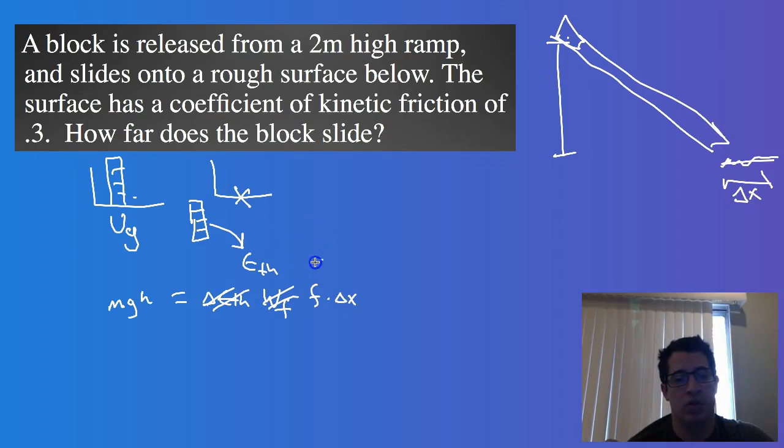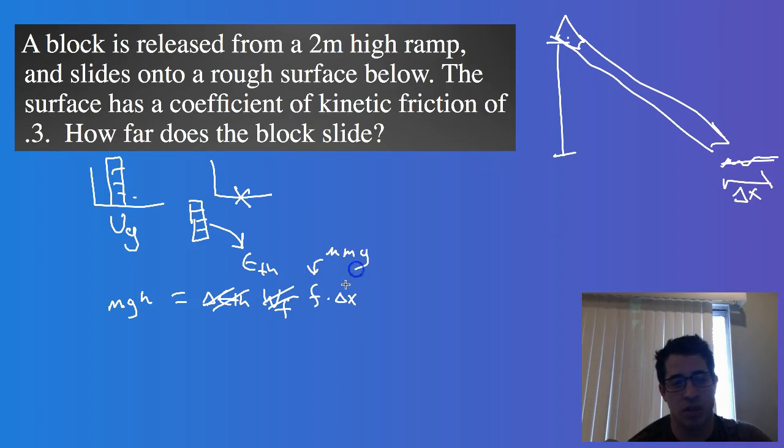And so frictional force is going to be mu times mg. And so when we plug all this stuff in, we get that our potential energy on the left side is going to be equal to mu times M times G times delta X.